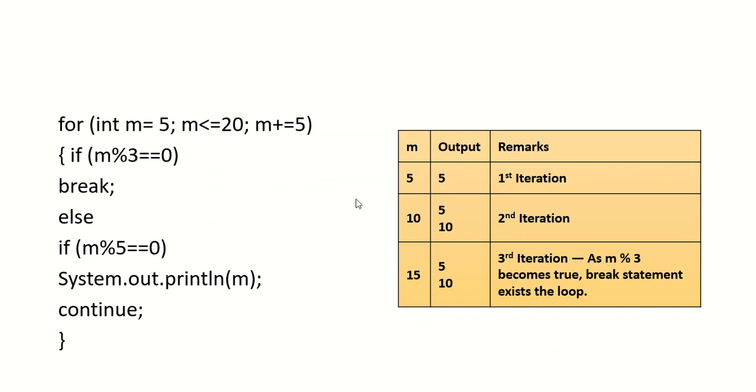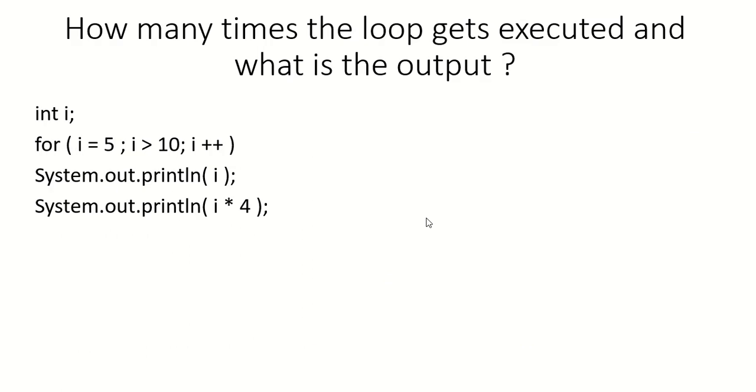Here also, m modulus 3. You can see how it works. Every time the loop gets executed, here the loop gets executed thrice and the output will be 5 and 10. First iteration m is 5, output is 5. Second iteration 10, so output is 5 and 10. Third iteration becomes 15, so the loop will exit. Whatever was the previous value, it is 5 and 10.